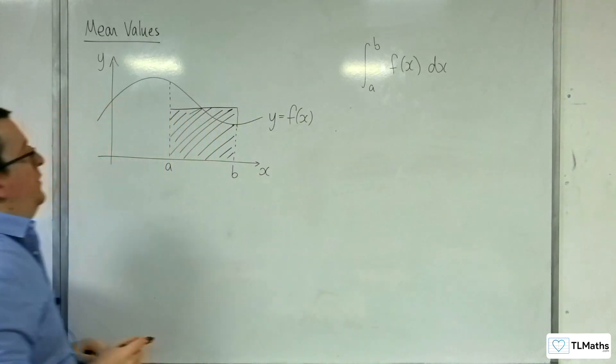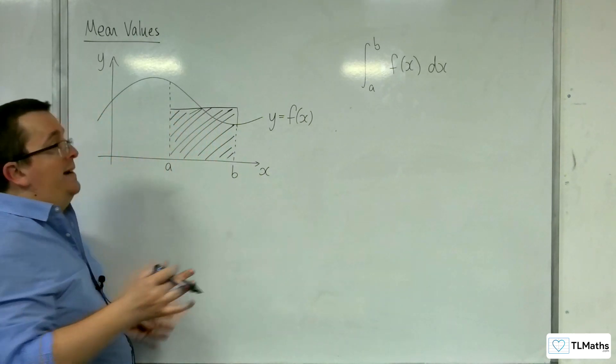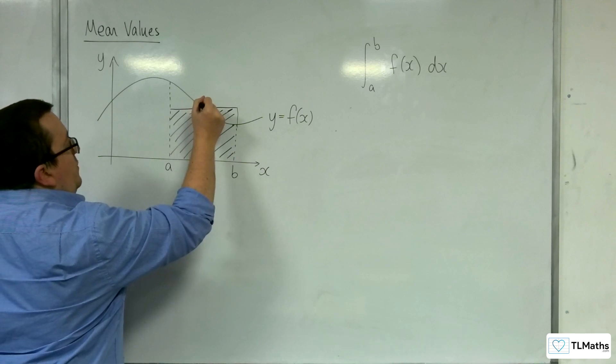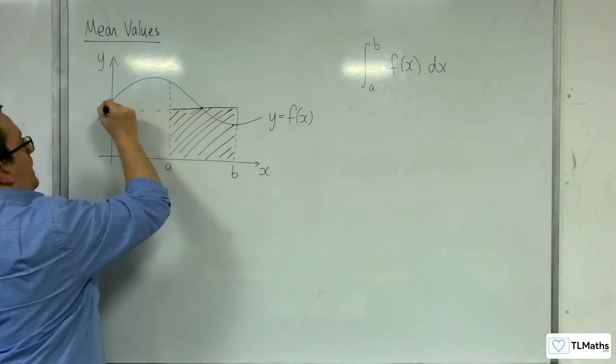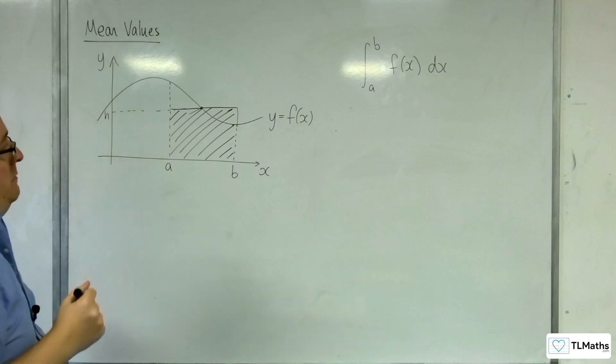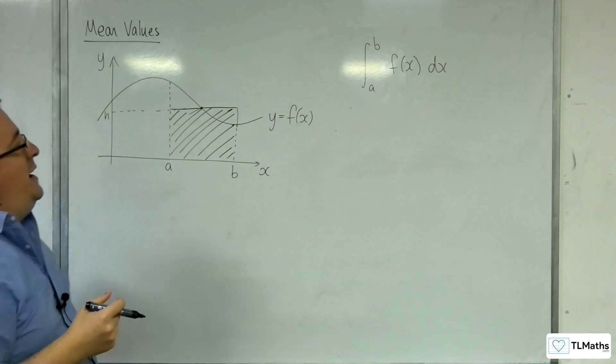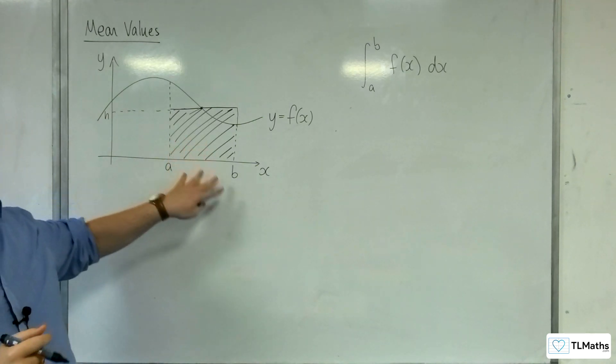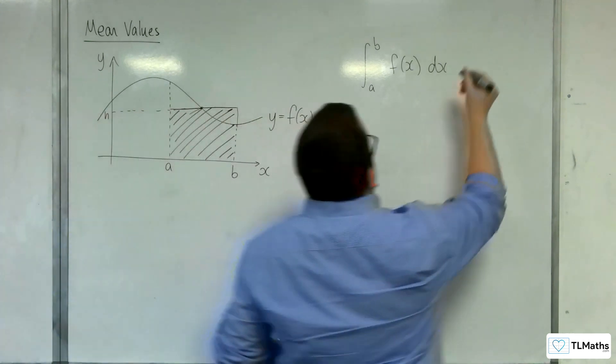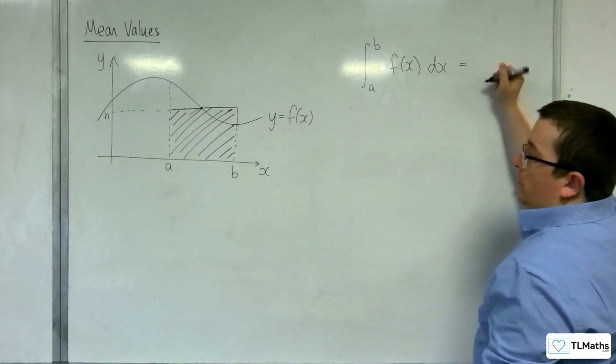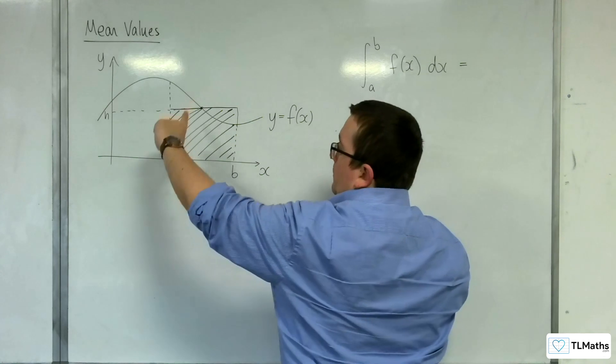So the idea of this mean value is really to do with this point here, which we can call h. So we can say that the area of that rectangle would be equal to the base times the height.